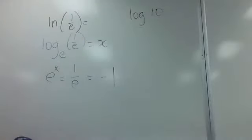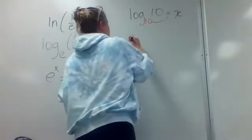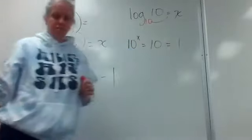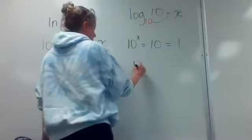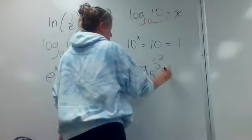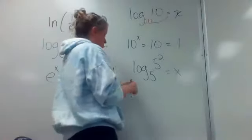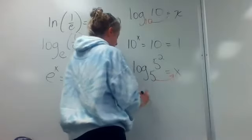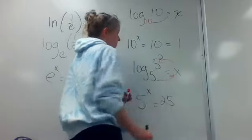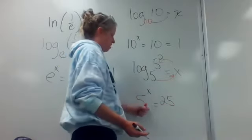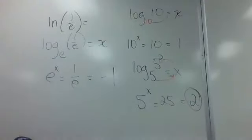Number 9: log of 10. What's the base if you don't see it? 10. So 10 to what power is 10? One. Number 10: log base 5 of 5 squared. Five to what power equals 5 squared, which is 25? The answer is 2, because five squared is five squared.